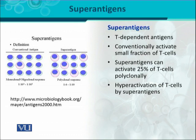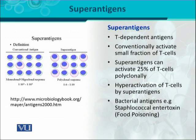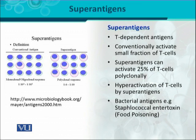Looking at examples of where super antigens are present — in bacteria, there are many bacterial antigens that act as super antigens. For example, Staphylococcus aureus, a gram-positive coccus, secretes a toxin called staphylococcal enterotoxin. This toxin has the ability to cause food poisoning, and in doing so it causes hyper activation of T-cells, resulting in a hyper immune response.